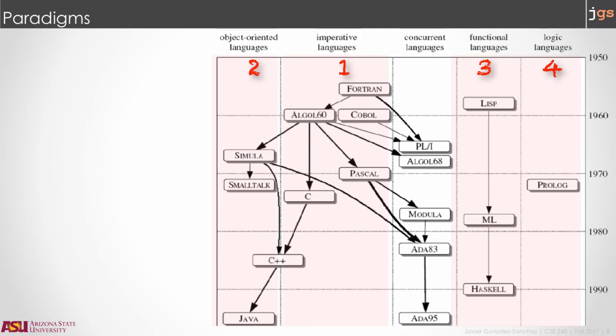From the first category, we're going to learn C. From the second category, you already know Java, and we're going to review C++. As you notice, C++ is in the middle between object-oriented and imperative. C++ has features from both categories. And finally, we're going to review Lisp as a functional language, and Prolog in the category of logic languages.